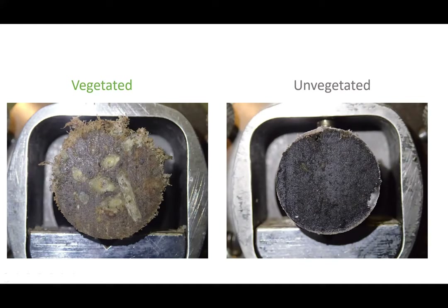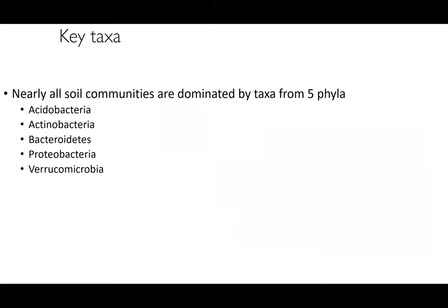There are a number of key taxa we find in soils. Basically every soil community across the planet — whether you're in Antarctica, Massachusetts, or Russia — is dominated by taxa from five phyla: Acidobacteria, Actinobacteria, Bacteroidetes, Proteobacteria, and Verrucomicrobia. Let's talk about a few of these important soil taxa.